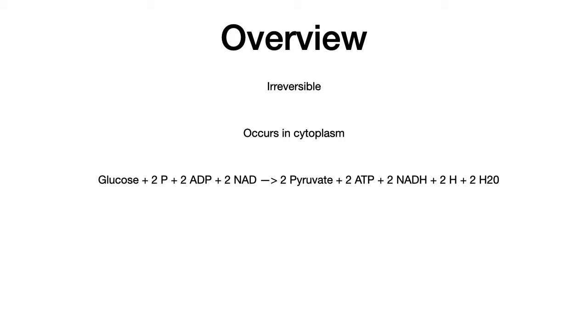Simply put, glycolysis is taking glucose and breaking it down into storable products that the body can use in other biochemical pathways. Now that we've understood the overview, let's get into the meat and potatoes. We're going to talk about the pathway, paying very special attention to the regulatory mechanisms and the rate-limiting enzyme.